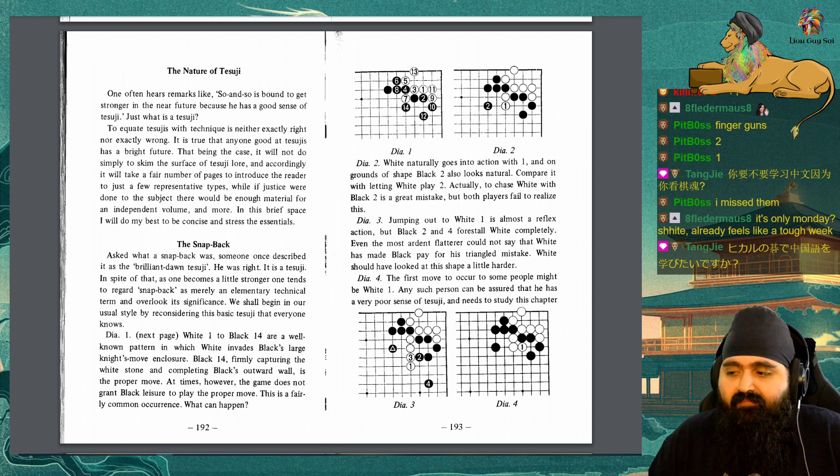Diagram 1: White 1 to black 14 are a well-known pattern in which white invades black's large knight's move enclosure. Black 14, firmly capturing the white stone and completing black's outward wall, is the proper move. At times however, the game does not grant black leisure to play the proper move. This is a fairly common occurrence. What can happen? Diagram 2: White naturally goes into action with 1, and on grounds of shape black 2 also looks natural. Actually to chase white with black 2 is a great mistake, but both players fail to realize this.